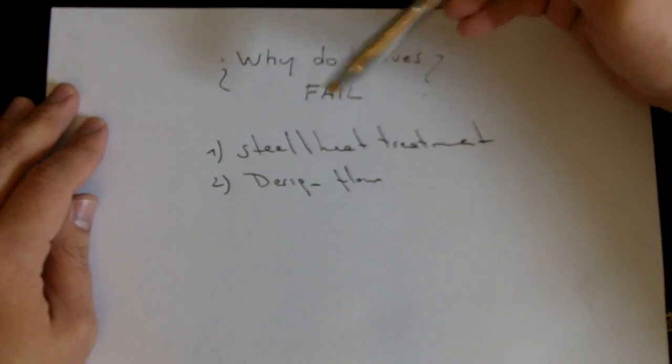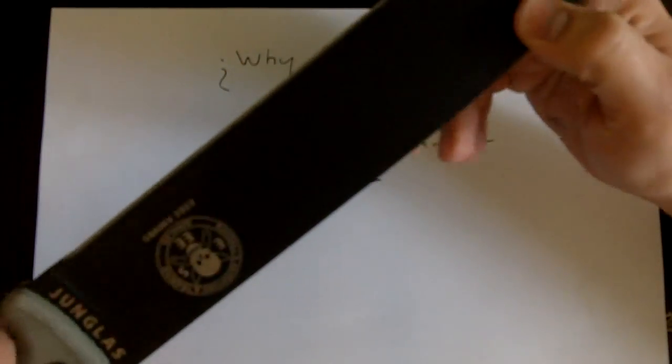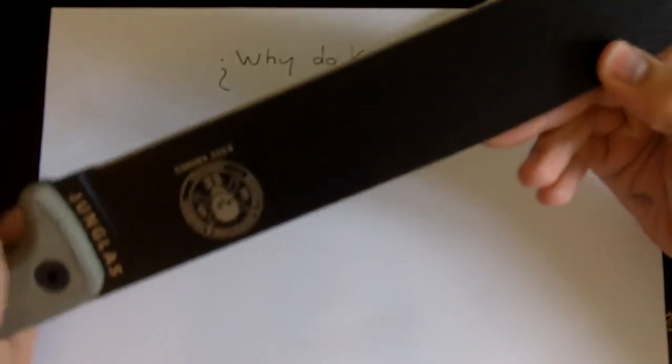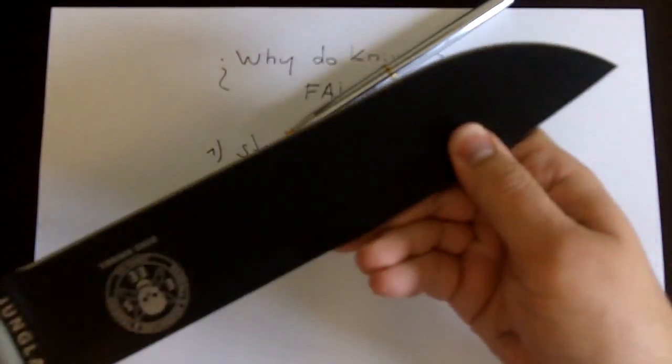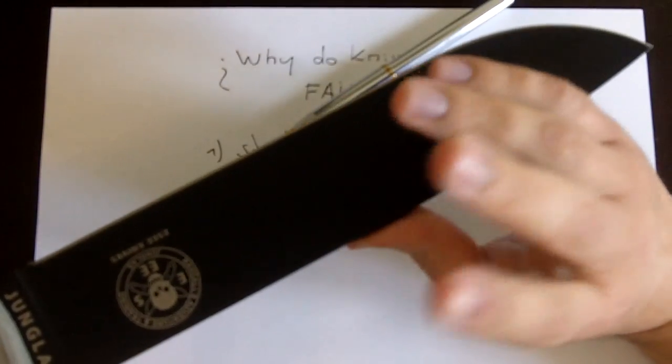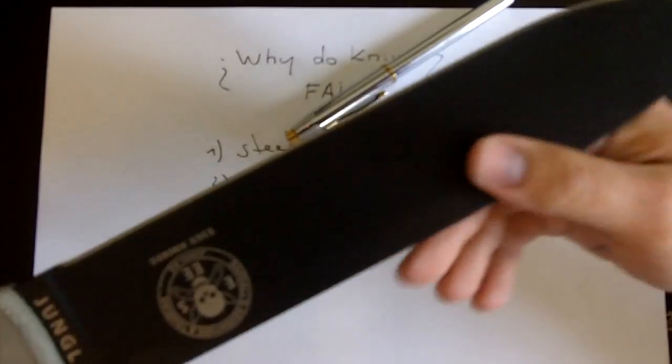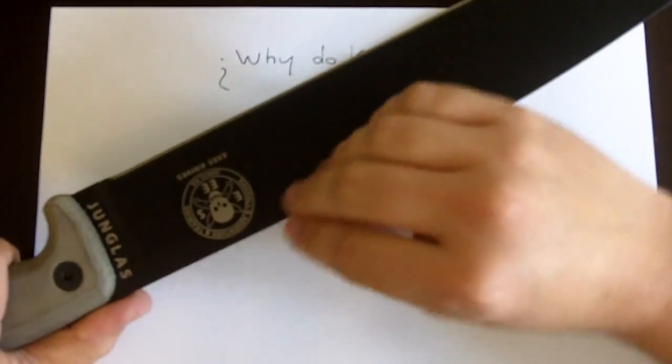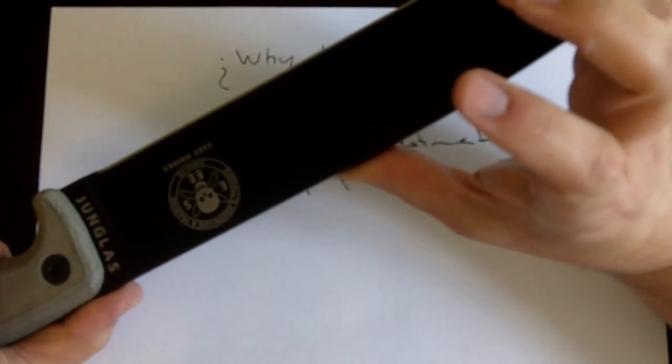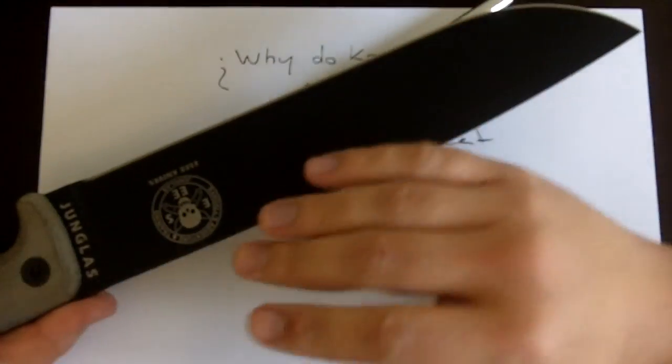There's about the first point steel and heat treatment. There's arguably no better example than the case of the SC Junglas. The SC Junglas is actually the exact same knife as another knife called the RTAC II. The Ontario RTAC II is the exact same knife, the exact same steel. Both of these are 1095. Now being the same shape, being the same steel, the only difference was the heat treatment. And with the poorly or unfortunate heat treatment in the RTAC II, that made all the difference in the world.